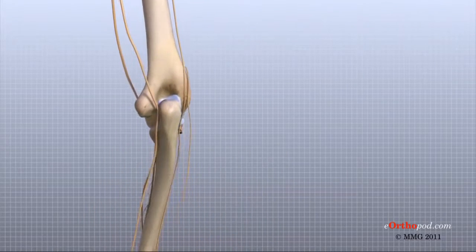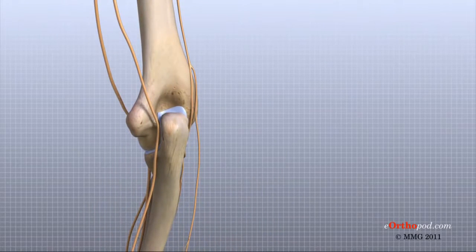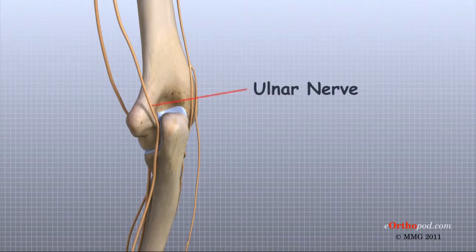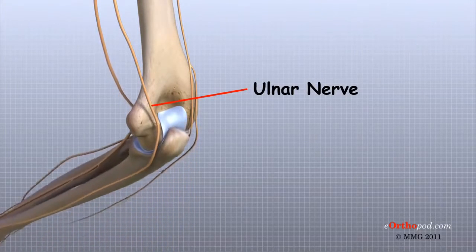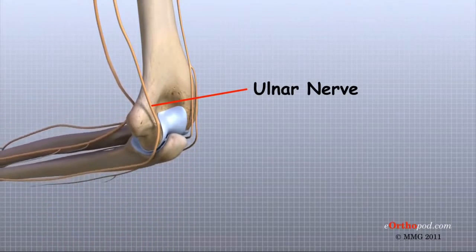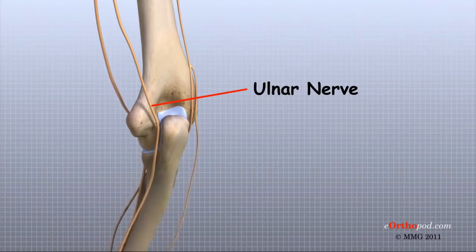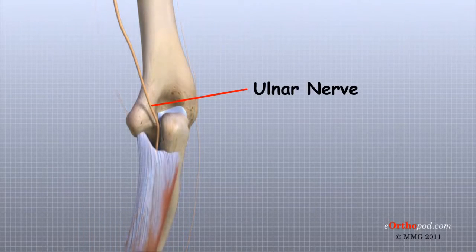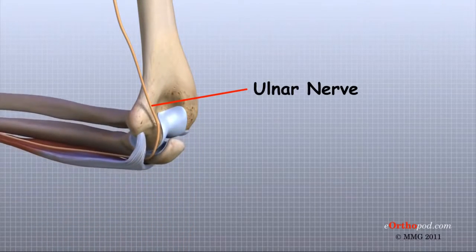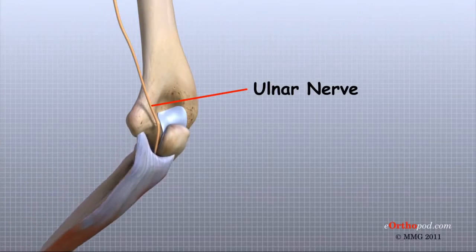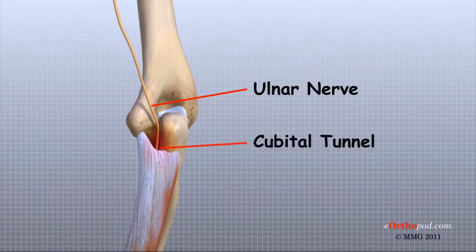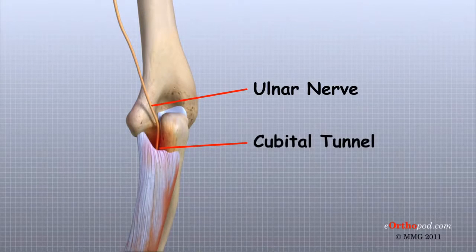Some of the more common problems around the elbow involve problems with the nerves. Each nerve travels through its own tunnel as it crosses the elbow. Because the elbow must bend a great deal, the nerves must bend as well. Constant bending and straightening can lead to irritation or pressure on the nerves within their tunnels and cause problems such as pain, numbness, and weakness in the arm and hand. These conditions are sometimes called nerve entrapment or nerve compression syndromes.